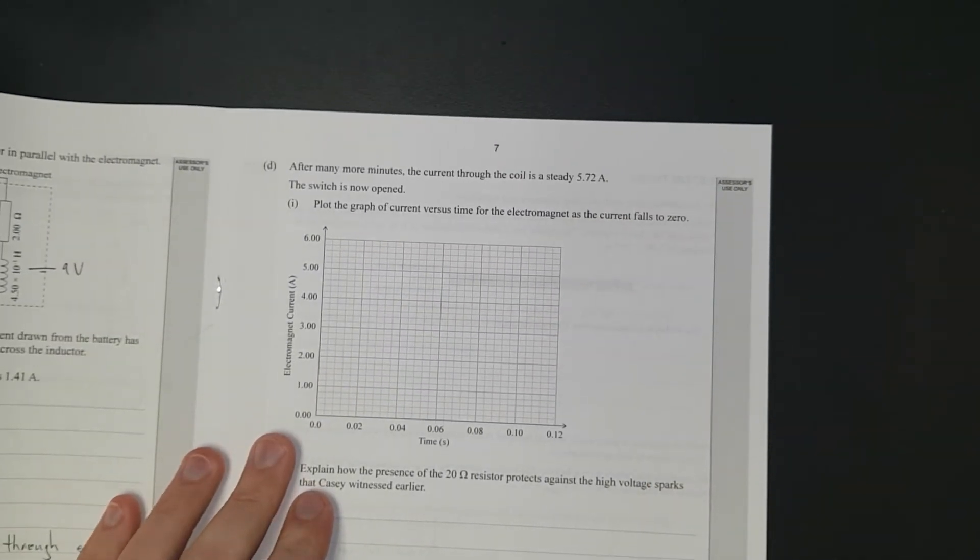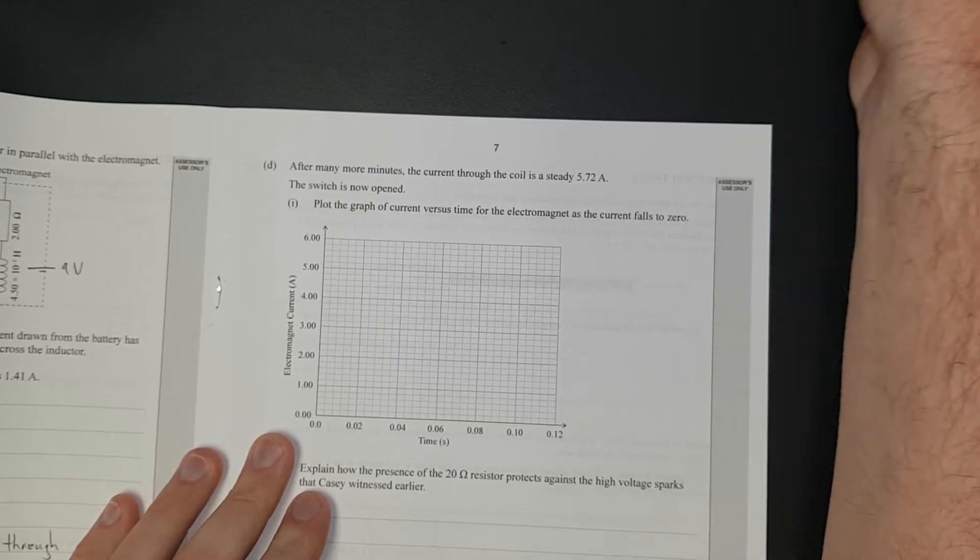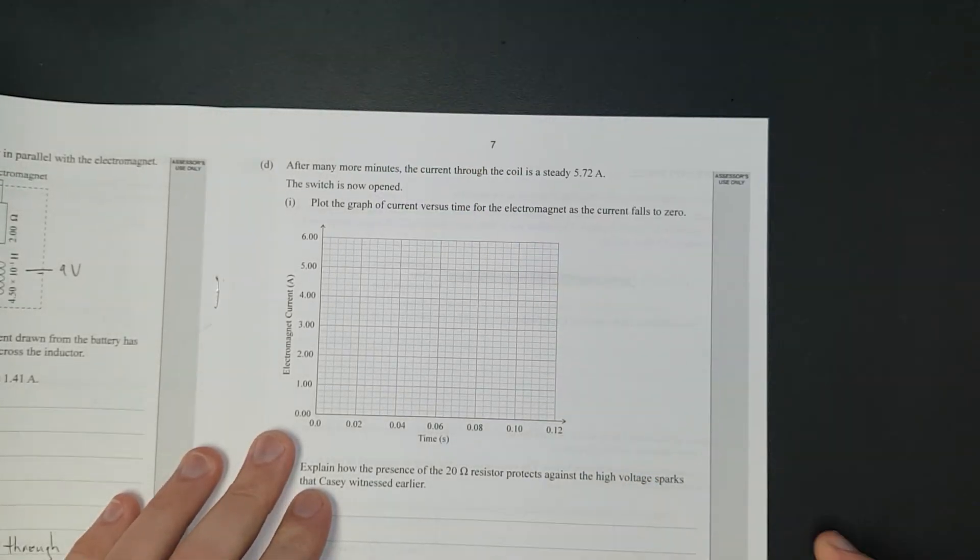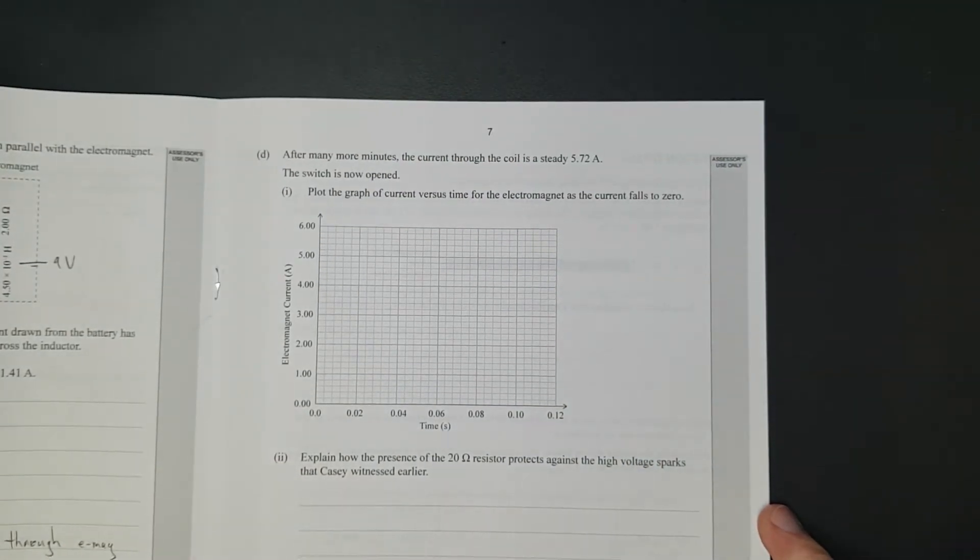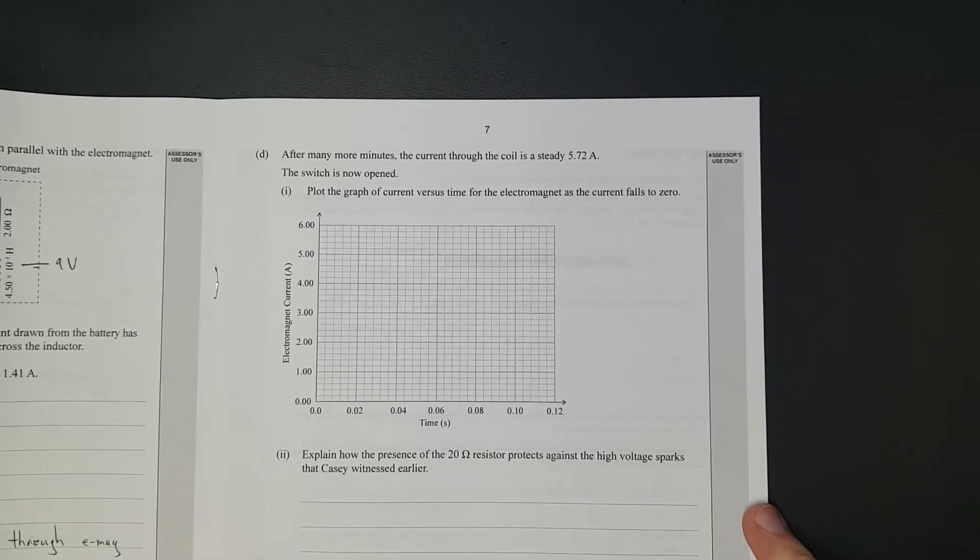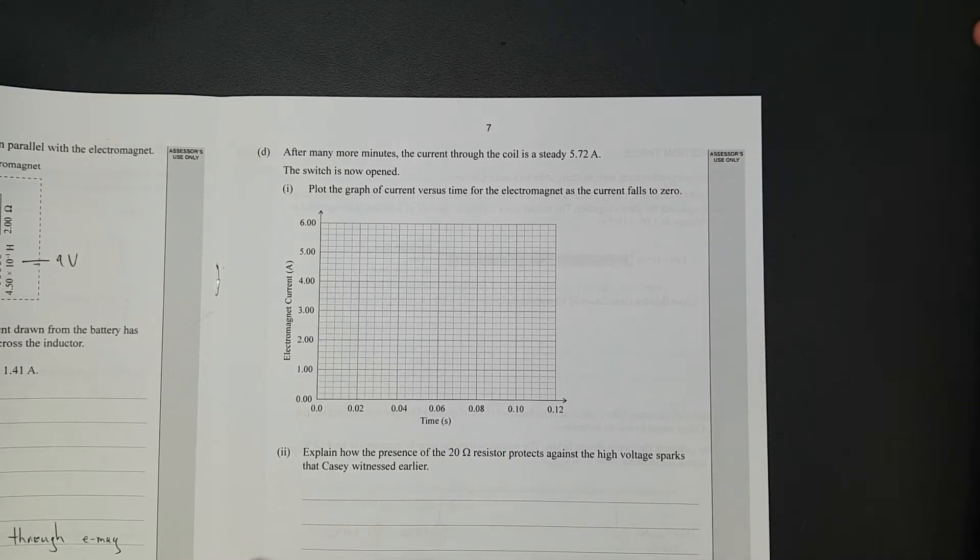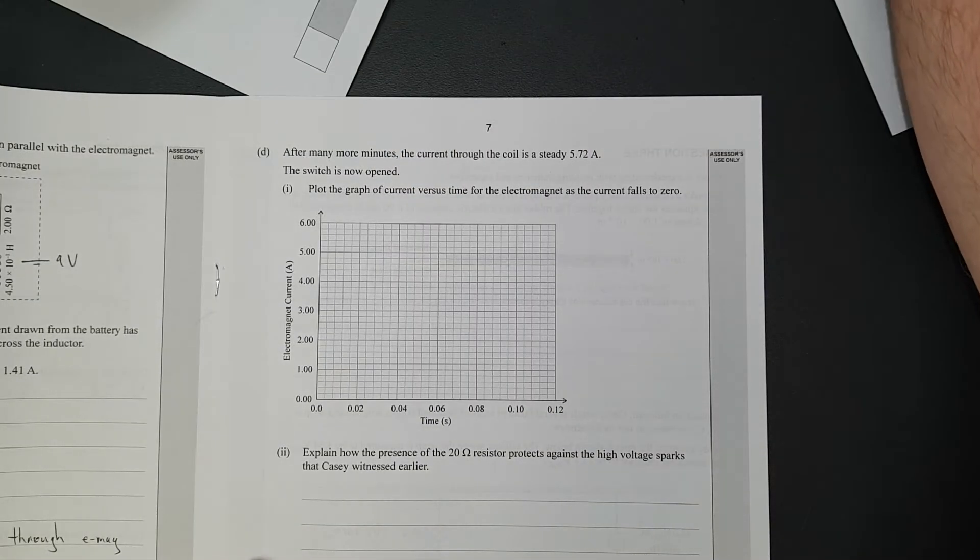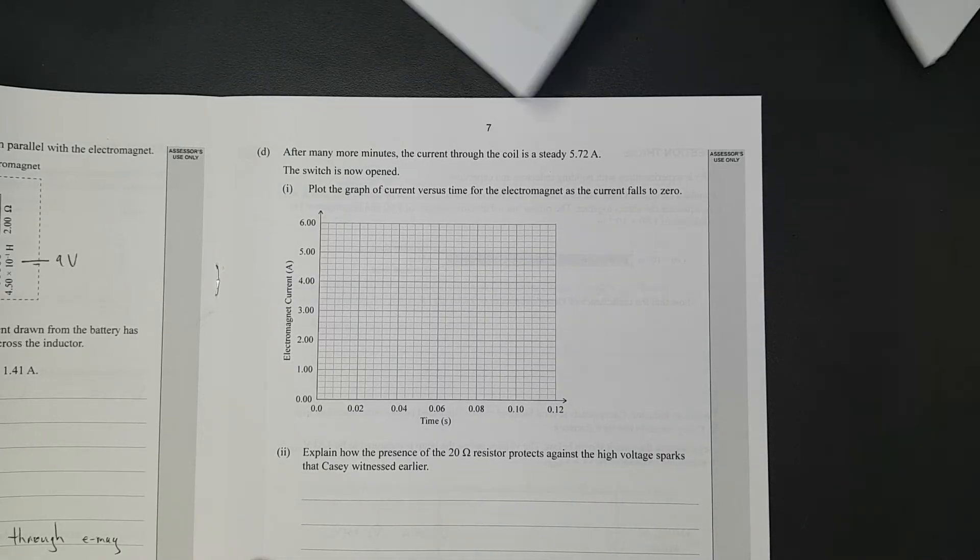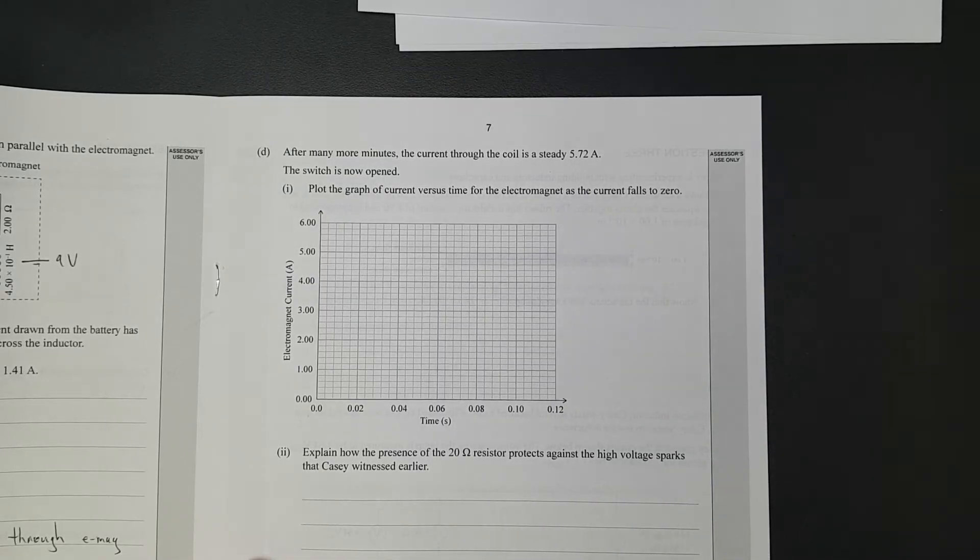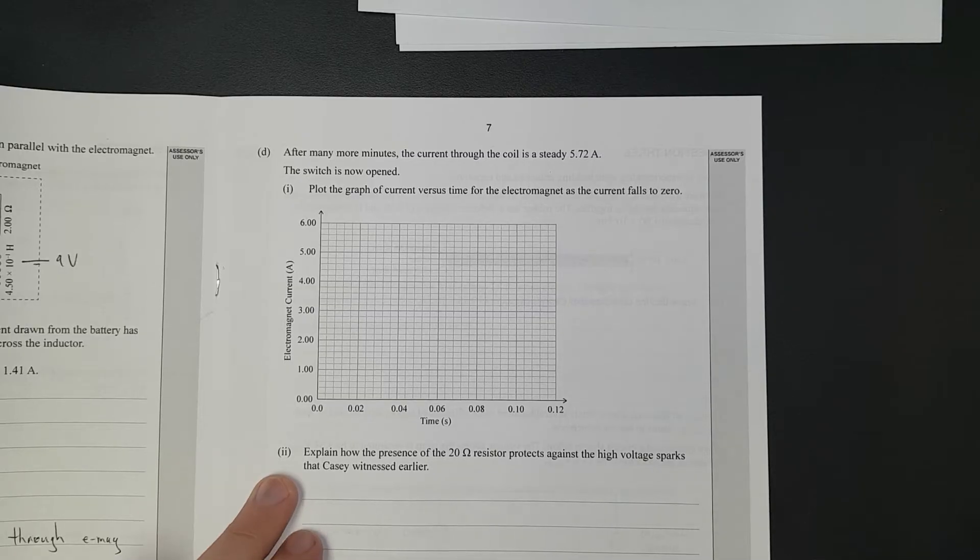After many more minutes, the current through the coil is at steady state at 5.72 amps. The switch is now opened. Plot the graph of the current versus the time for the electromagnet as the current falls to zero. So what are we going to do? So we're going to find out the time constant of the circuit.